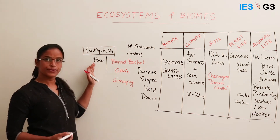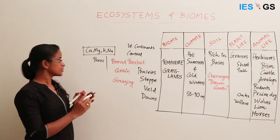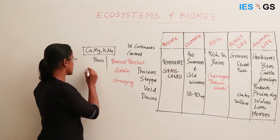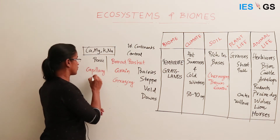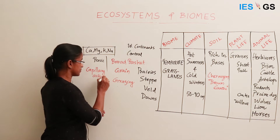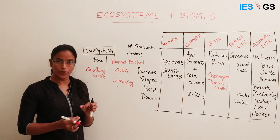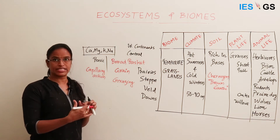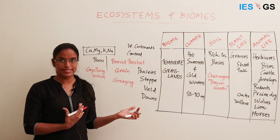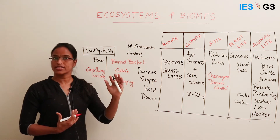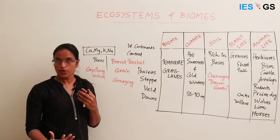These salts are abundant in the soil due to an action called capillary action. Capillary action is the tendency of water to rise through narrow pores against gravity. In grasslands, precipitation is less, so evaporation is on a higher side than precipitation, so more water tends to evaporate from the soil.